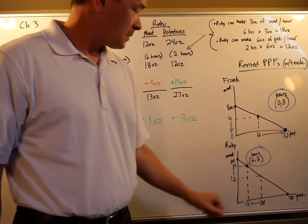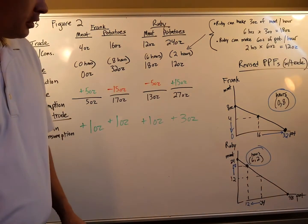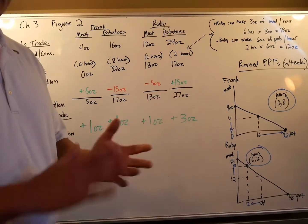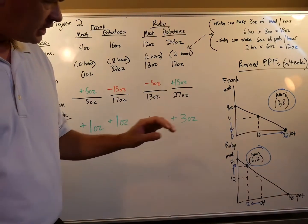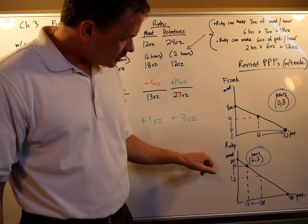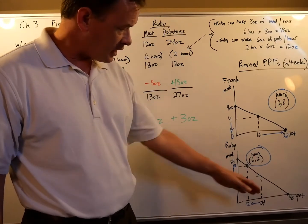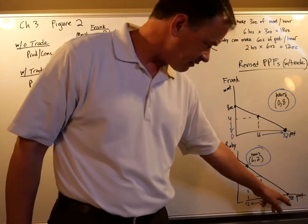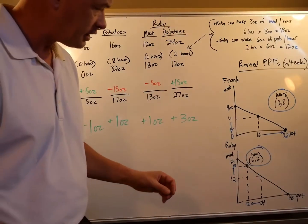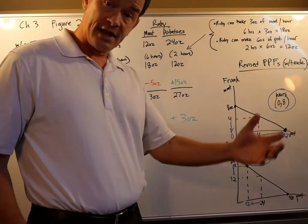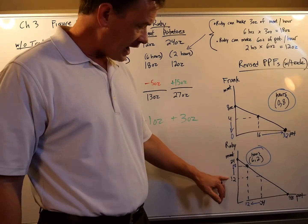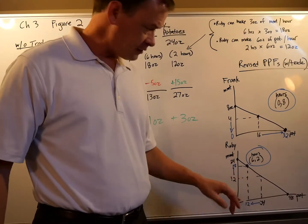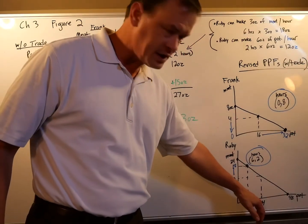Ruby proposed that Frank stop raising cattle altogether, shifting all eight hours to potatoes, going from 16 ounces at four hours to 32 ounces at eight hours. Ruby said she's pretty good at raising cattle but also decent at growing potatoes - she has an absolute advantage in both. If she spent all day on meat she makes 24 ounces; all day on potatoes she makes 48 ounces. Before trade, she divided her time evenly - four hours each - making 12 ounces of meat and 24 ounces of potatoes.